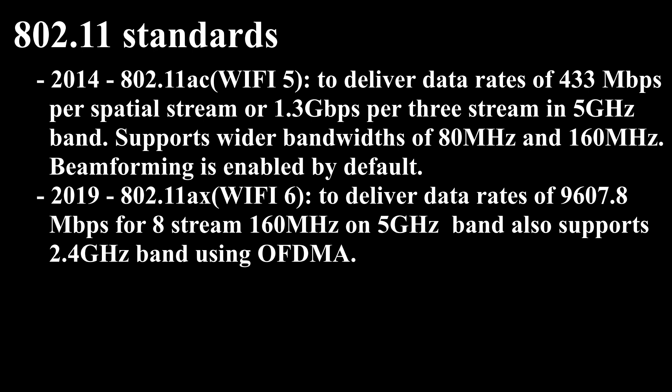802.11ac delivers data rates of 433 Mbps per spatial stream or 1.3 Gbps in a three-antenna, three-stream design. The 802.11ac specification operates only in the 5 GHz frequency range and features support for wider channels — 80 MHz and 160 MHz — and beamforming capabilities by default to help achieve its higher wireless speeds.